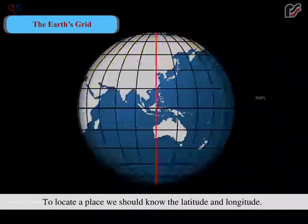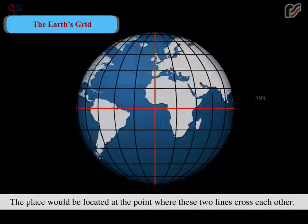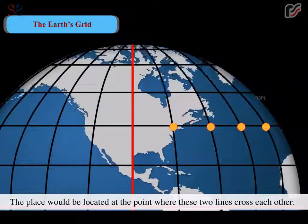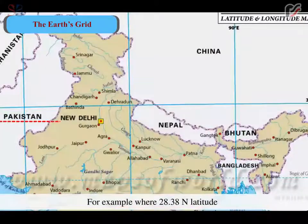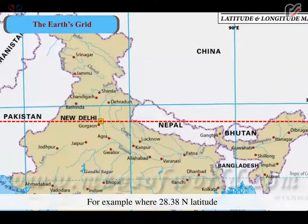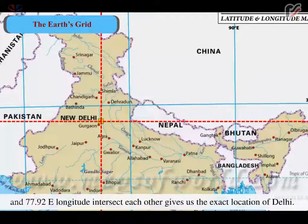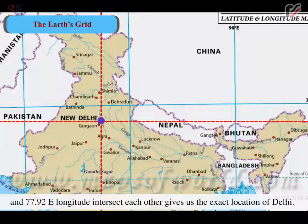To locate a place, we should know the latitude and longitude. The place would be located at the point where these two lines cross each other. For example, where 28.38 degree north latitude and 77.92 degree east longitude intersect each other gives us the exact location of Delhi.